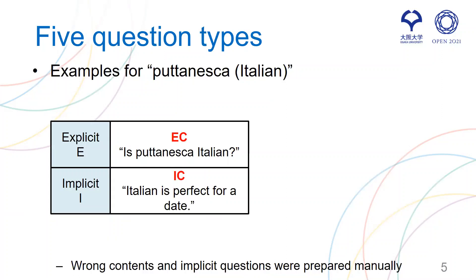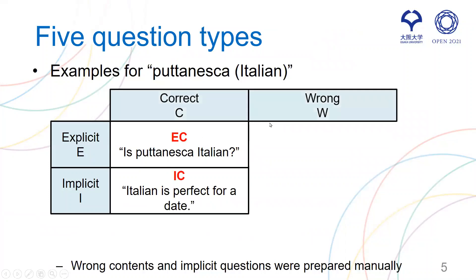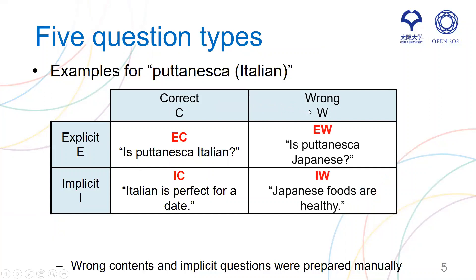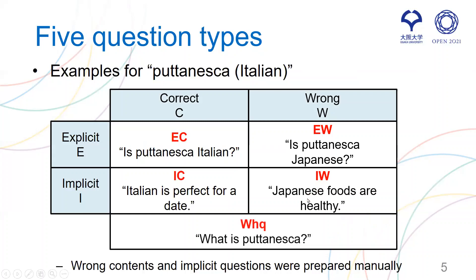Let me show examples for Puttanesca, whose correct category is Italian. The explicit question (EC) is: is Puttanesca Italian? And the implicit question (IC) is: Italian is perfect for a date. Here, E and I denote explicit and implicit questions respectively, and C and W denote correct and wrong contents. The explicit question with wrong content (EW) is: is Puttanesca Japanese? And the implicit wrong question (IW) is: Japanese food are healthy. We also prepared another question type, the WH-question: what is Puttanesca? Note that the wrong-content and implicit questions were prepared manually.